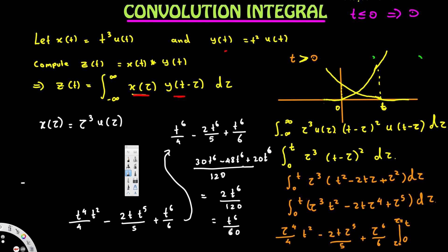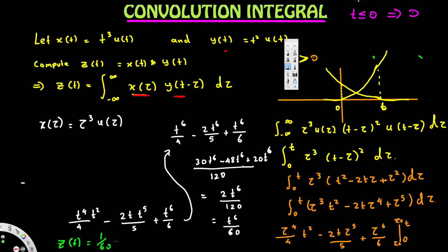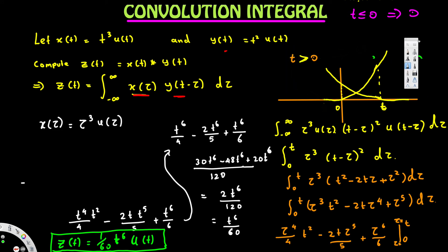So we have t to the sixth over 60 for the case t greater than zero. The final answer, multiplying by the unit step function, is z of t equal to one over 60 times t to the sixth times u of t. You can also express this as a piecewise function. That's the final answer.